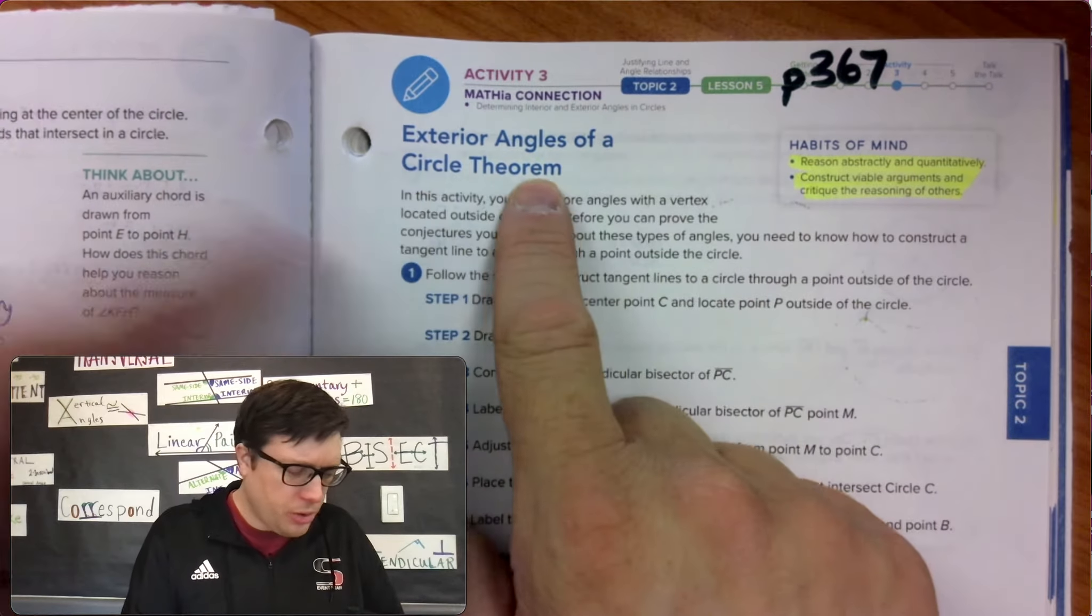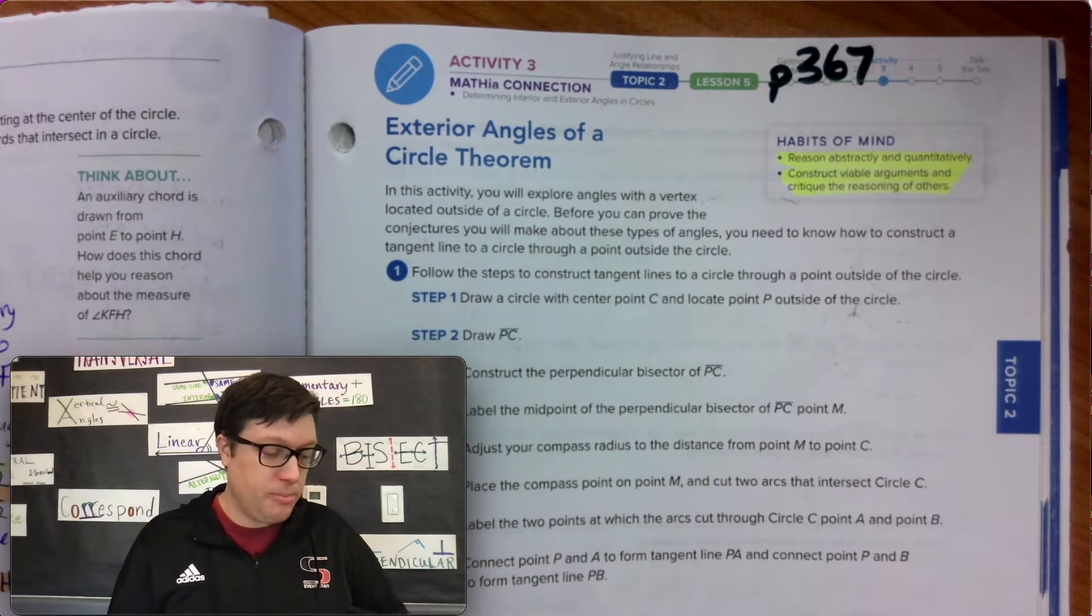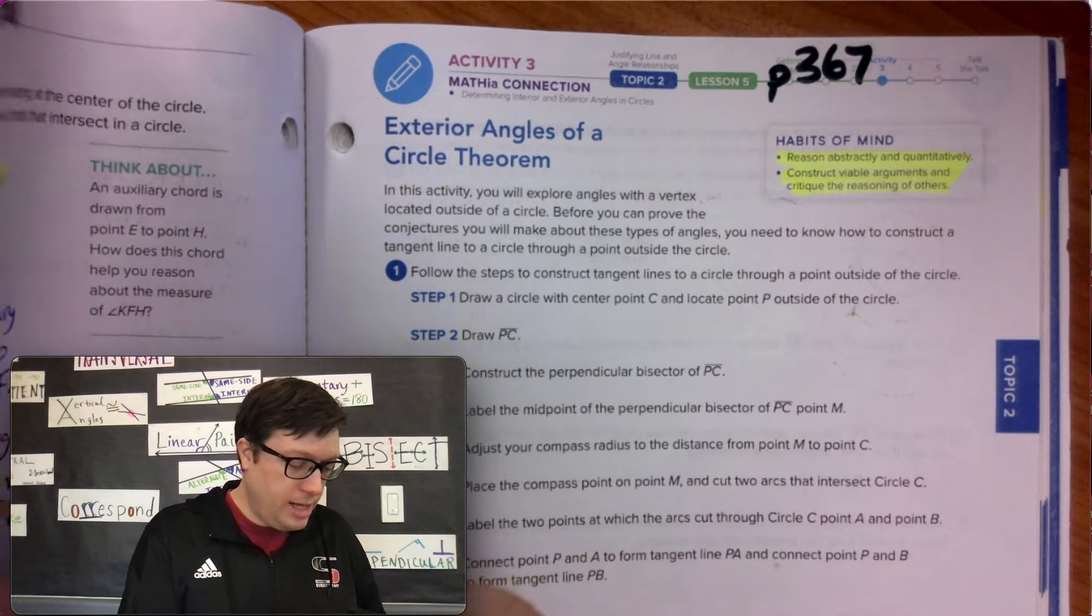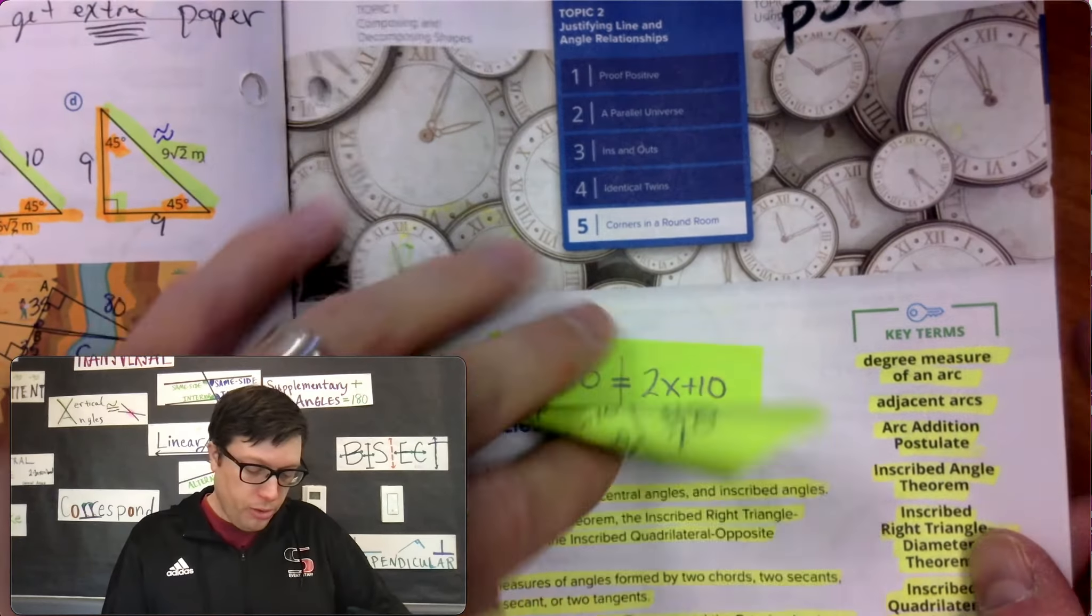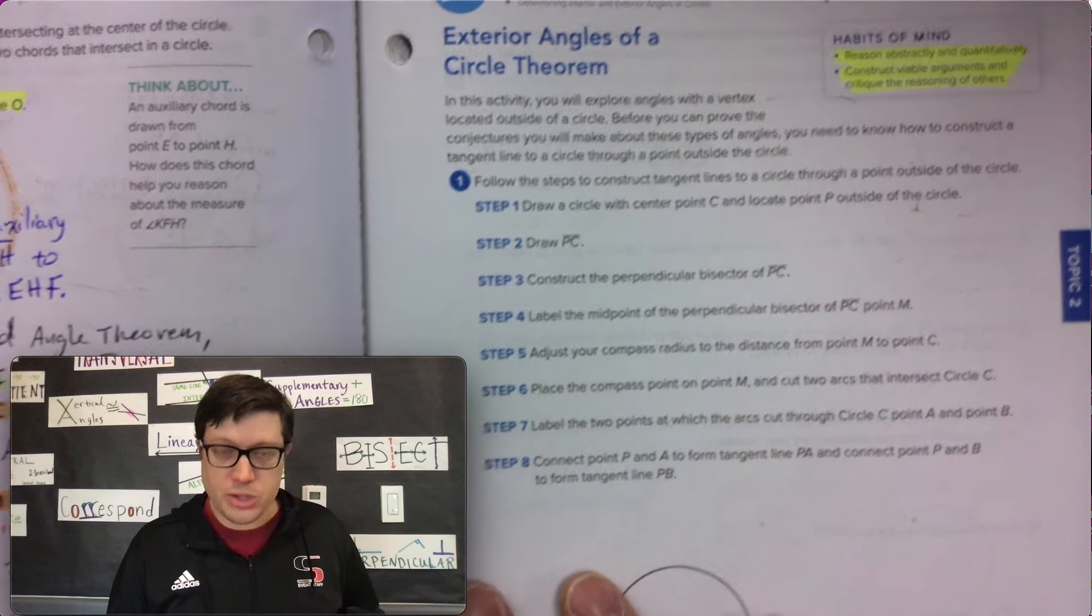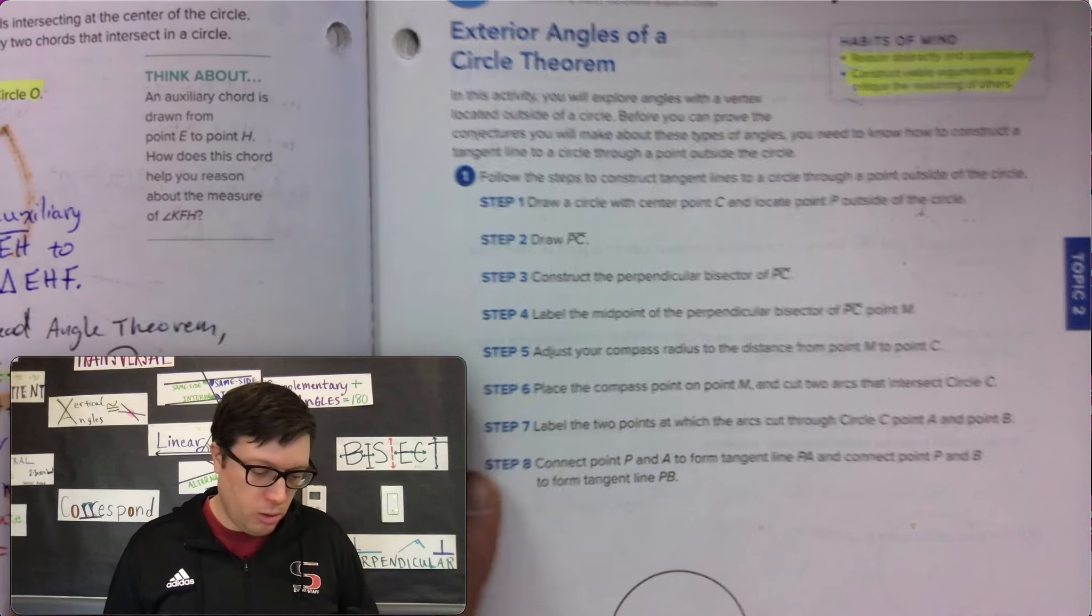Exterior angles of a circle theorem. This is related to our learning targets from page 355. On that page, we talked about proving or constructing a tangent line. We're really focusing on the exterior angles of a circle, just like we had off of the learning goal.